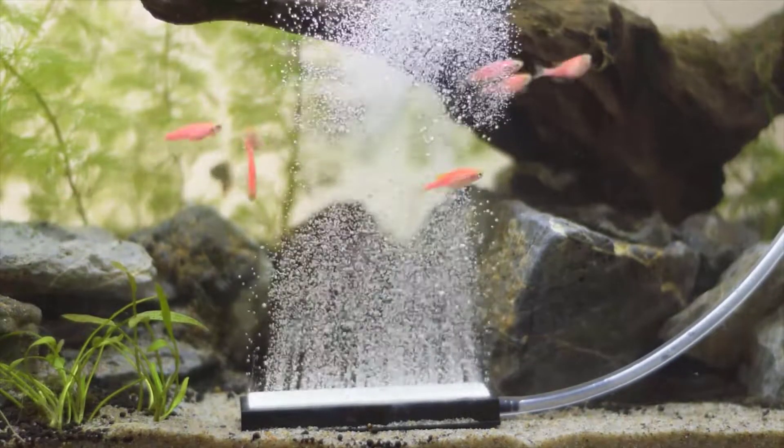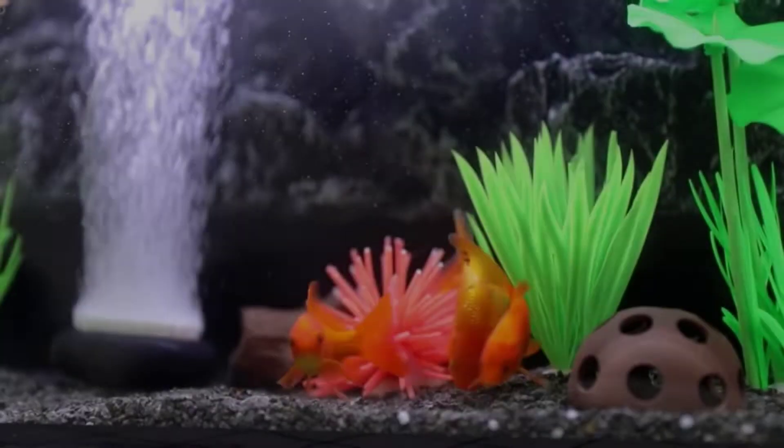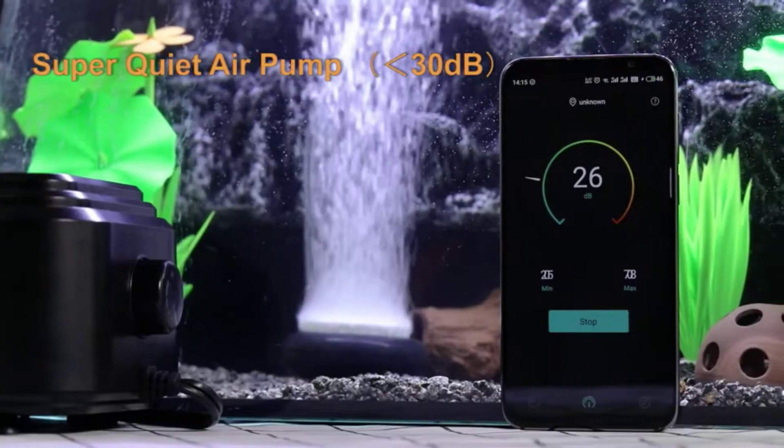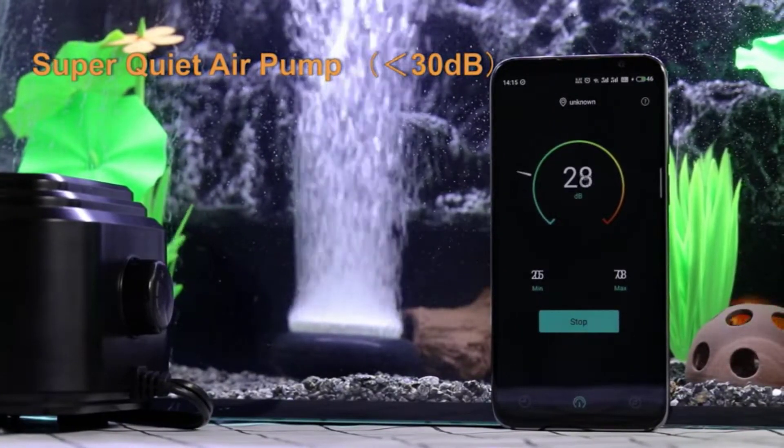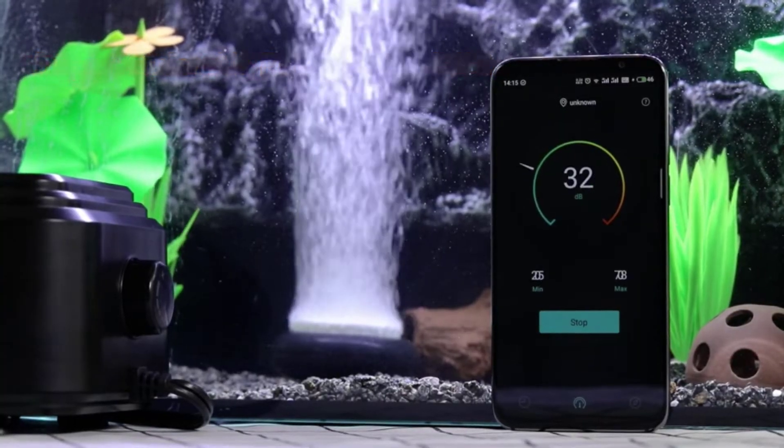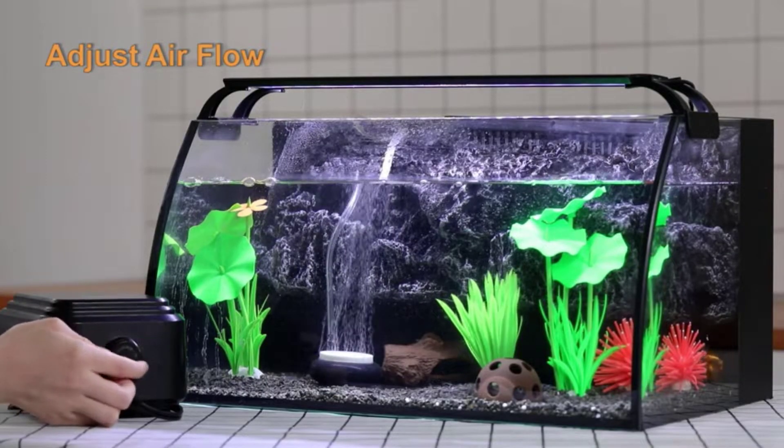An aquarium air pump is an essential tool for creating a healthy underwater environment. It helps to circulate oxygen and water flow, as well as other important elements like carbon dioxide and nitrogen.